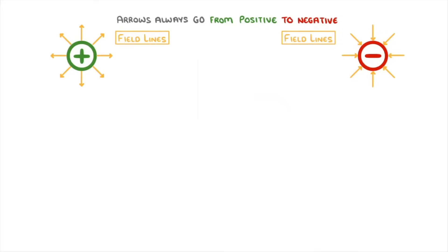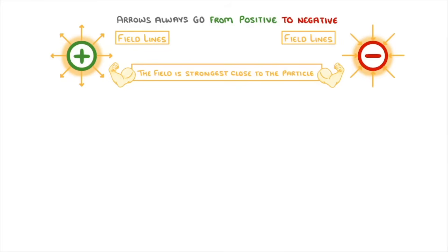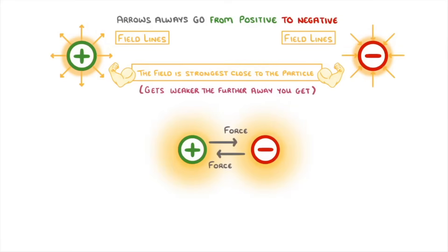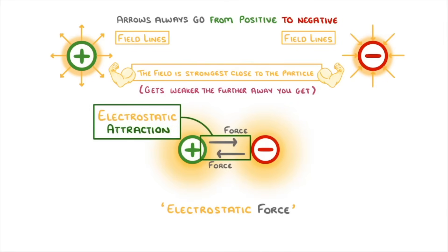Now the strength of the field is strongest close to the particle, and it gets weaker the further away you get. So as charged particles get closer together, their electric fields will start to interact more and more. If they're oppositely charged, like our particles here are, then there will be an attractive force between them, which we can call an electrostatic force, or in this case electrostatic attraction.